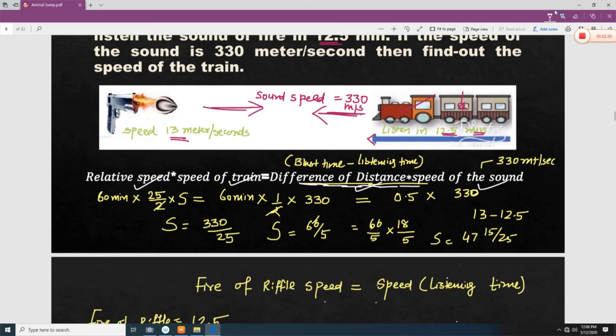The difference of distance means the difference between the speed of the rifle fired and the time it takes that the sound is heard by the passenger. So let us understand. The speed of the gun is at 13 meters per second and the passenger who is sitting in a train is listening in 12.5 minutes. So the difference between these two is 0.5 and this 0.5 is the distance.